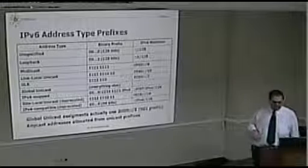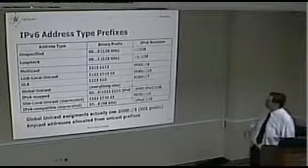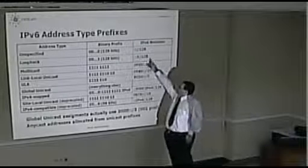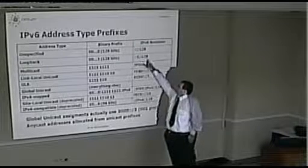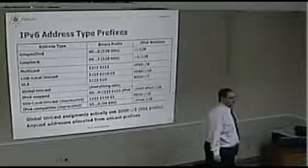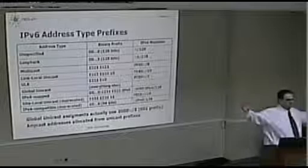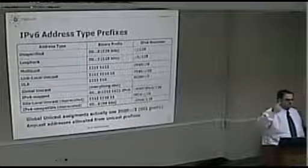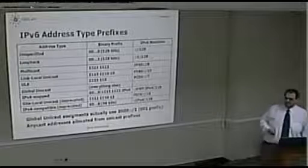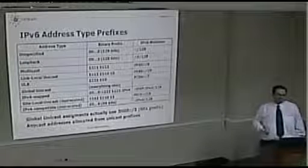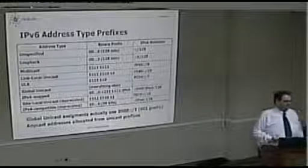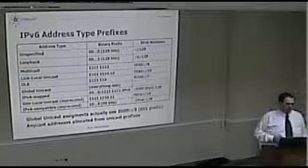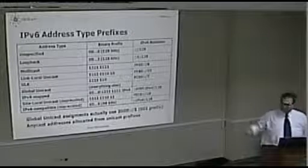Here are some nice examples. The double-colon-one address — all zeros and a single one at the end — is the loopback address. Remember 127.0.0.1 from IPv4? This is its equivalent in IPv6: ::1.